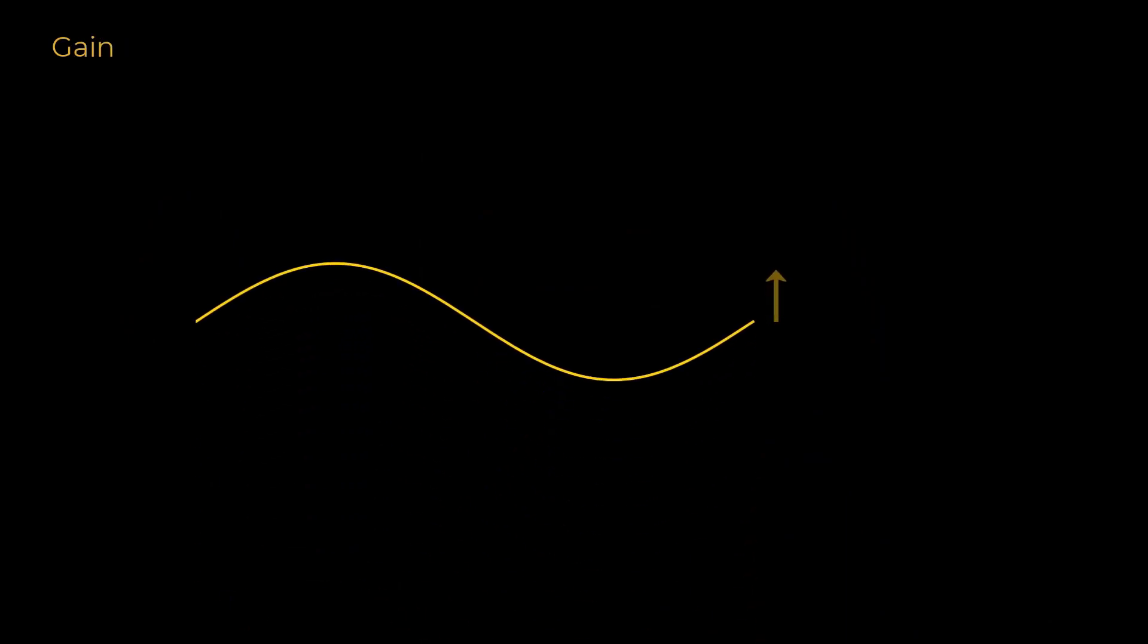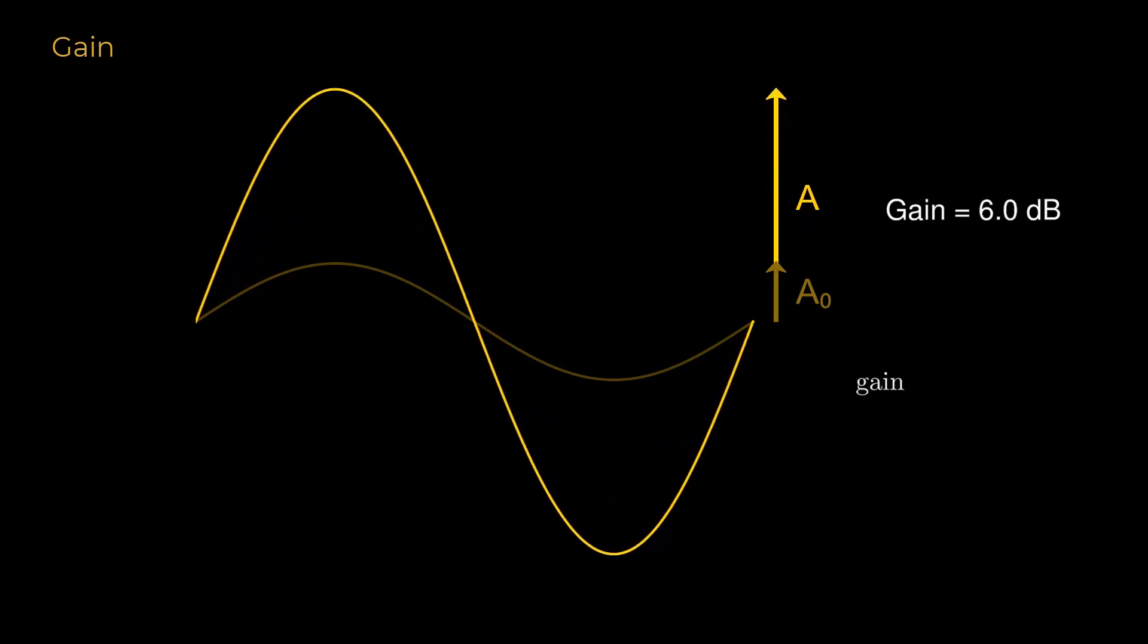Gain is how much the magnitude of the signal has increased. Usually measured in decibels, or dB. Suppose a signal quadruples in magnitude. It has undergone a gain of 6 decibels, calculated as 10 log 10 of the final amplitude divided by the starting amplitude.